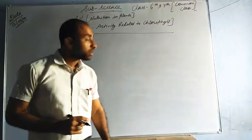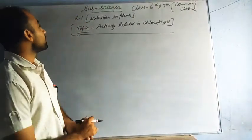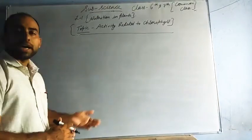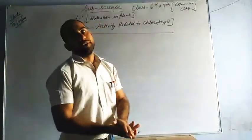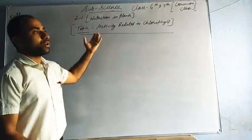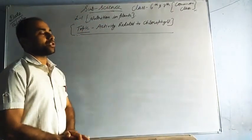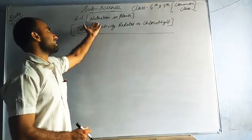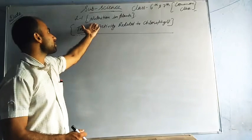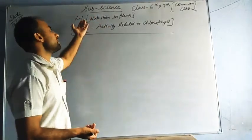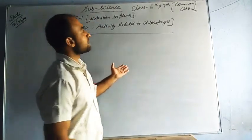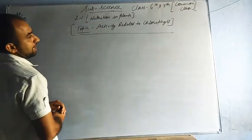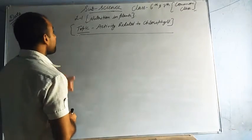Good morning class. Today we are going to learn the next topic, an activity related to chlorophyll. Chlorophyll is necessary for photosynthesis, this activity we are going to work on. Our lesson in progress is nutrition in plants, lesson one. This class is for 6th class and also for 7th class, a common class.